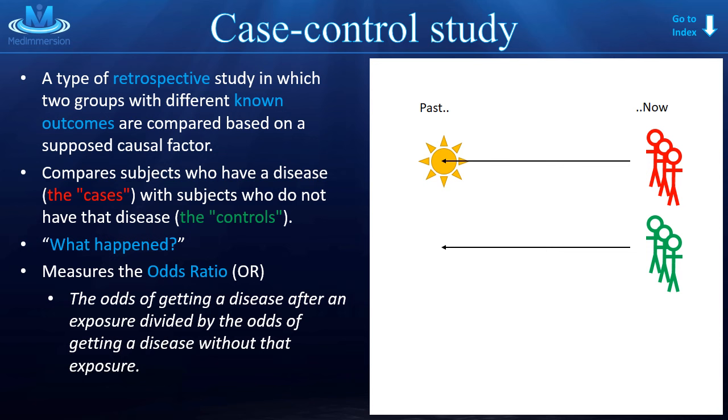Likewise, the people in the green group, some of them may have had excessive sun exposure as a youth. But really what we're looking at is the odds. Are the odds increased to get cancer when you have excessive sun exposure? And the answer in this case is yes, your odds are higher.